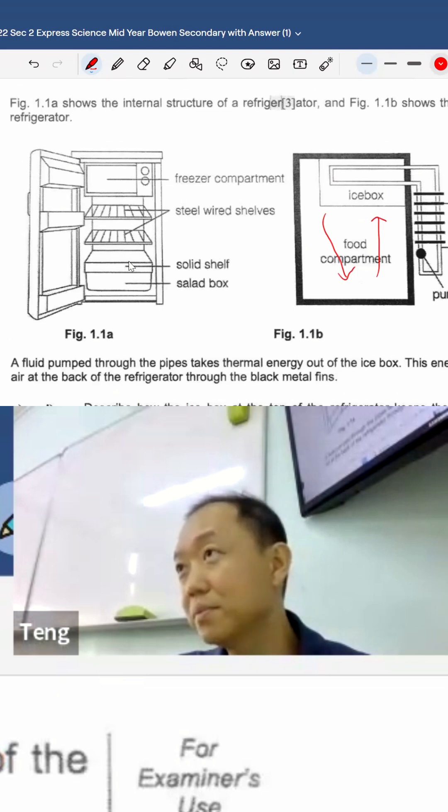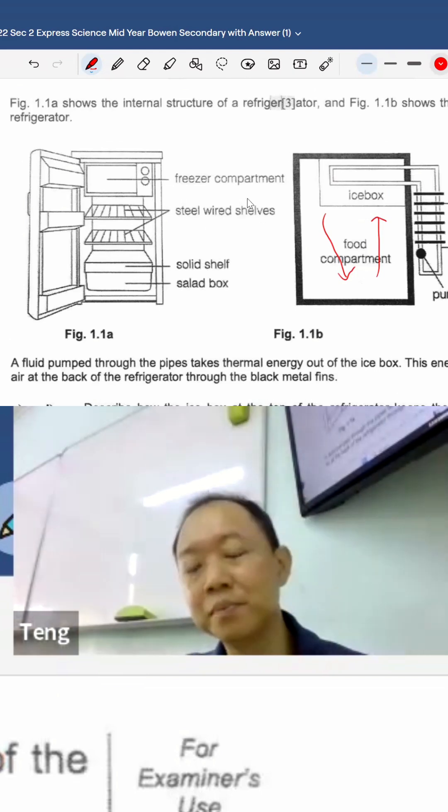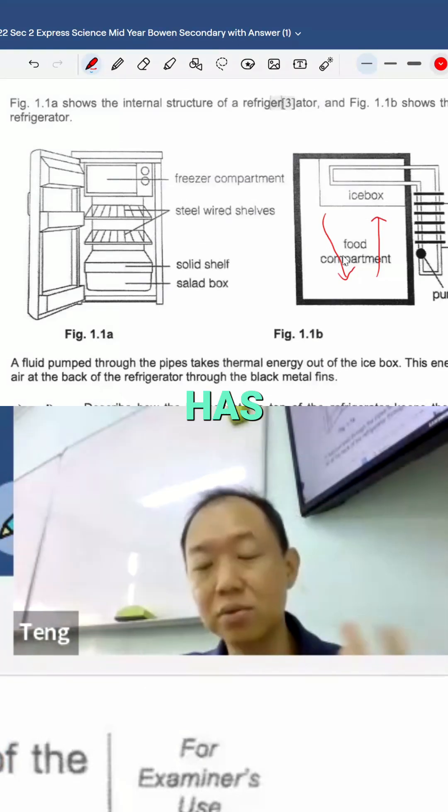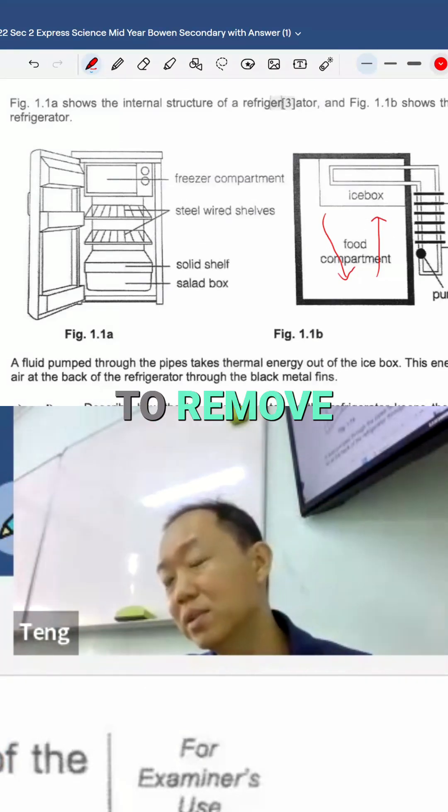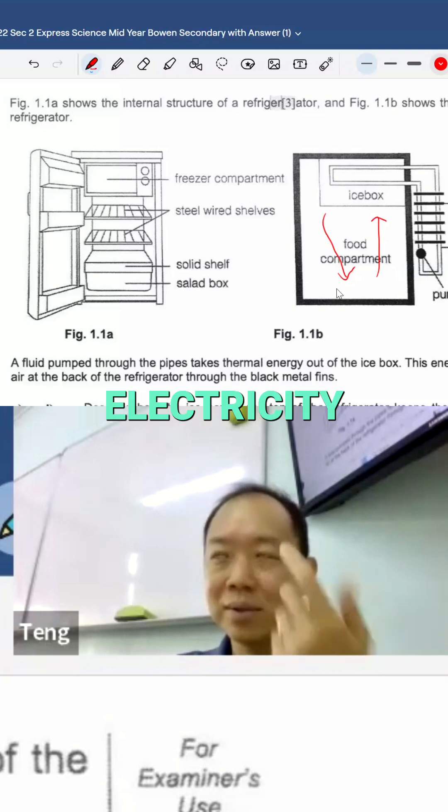Heat will go in, right? Heat gets transmitted inside. Heat gets transmitted inside, your fridge has to work harder to remove the heat. Okay, so that's one. So you waste more electricity.